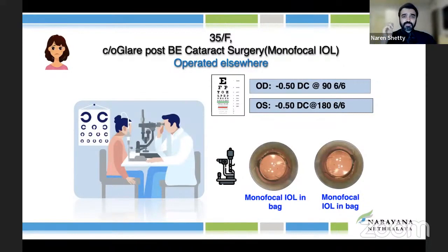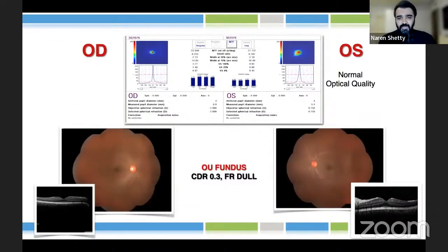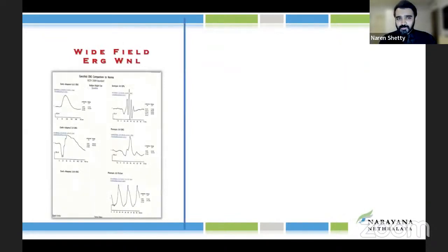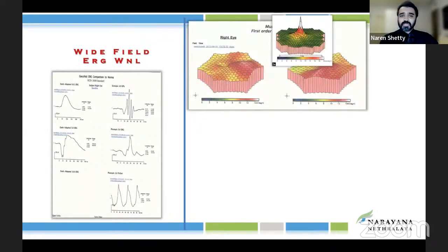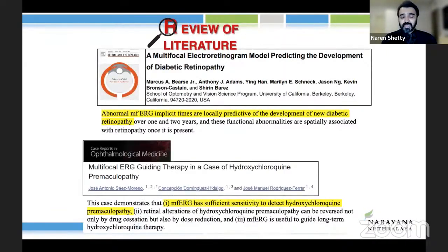Here's one more patient who came with a lot of glare and halos — a post-monofocal IOL implant. The imaging looked perfect, vision quality looked fantastic, no issues at all. The retina and fundus looked good, even the OCT looked normal. We decided to dig deeper: we did a wide-field ERG — within limits. We then did a multifocal ERG and could see a reduced density of the first-order response. It was an occult macular dystrophy leading to post-operative glare. These machines can pick up pre-maculopathy and will really save you when handling premium IOLs.